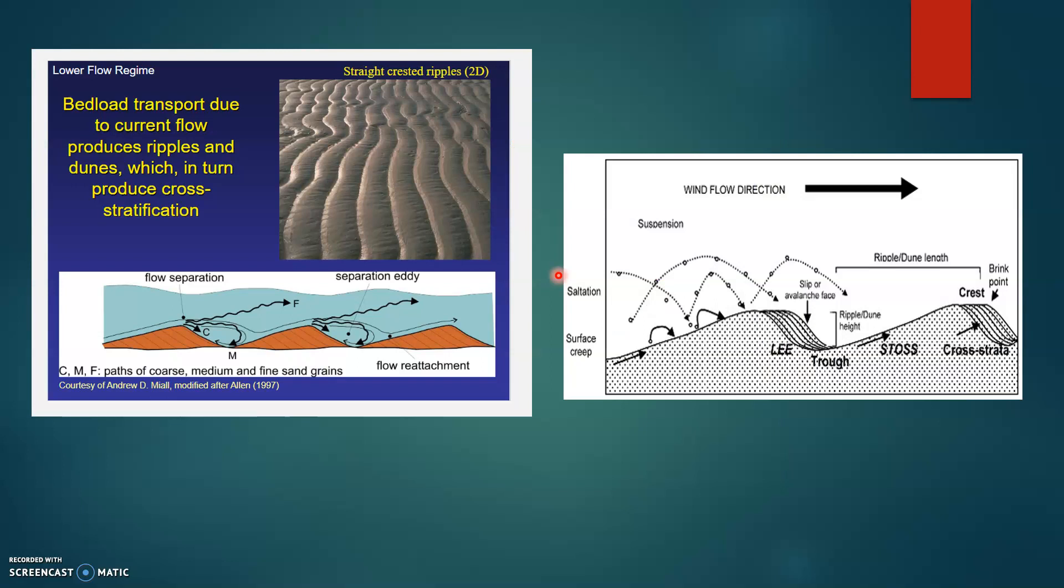Formation of dunes can be determined by bed load transport which is either traction or saltation. This dictates the geometry of the cross stratification.